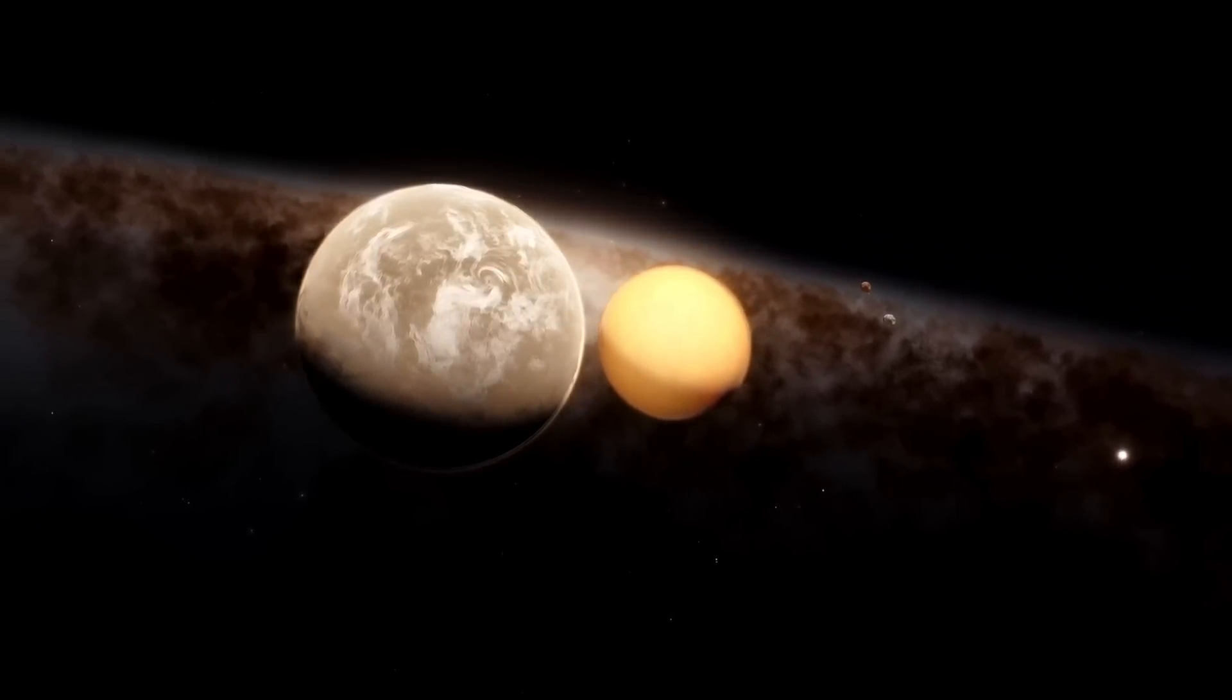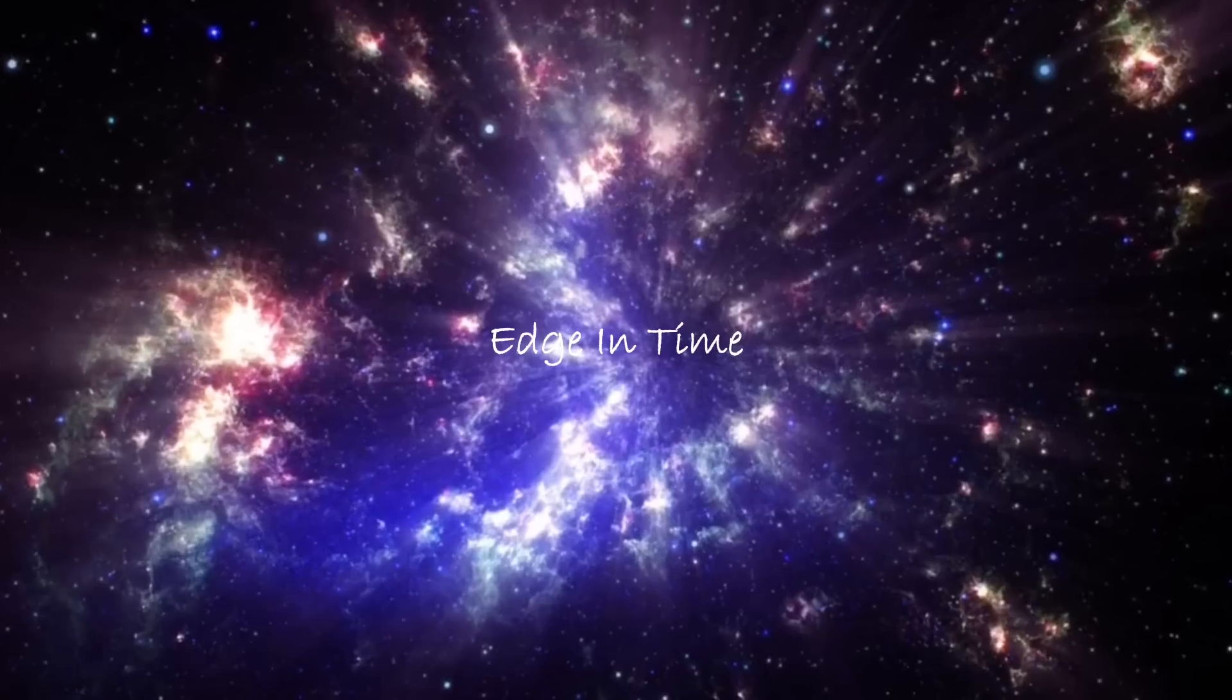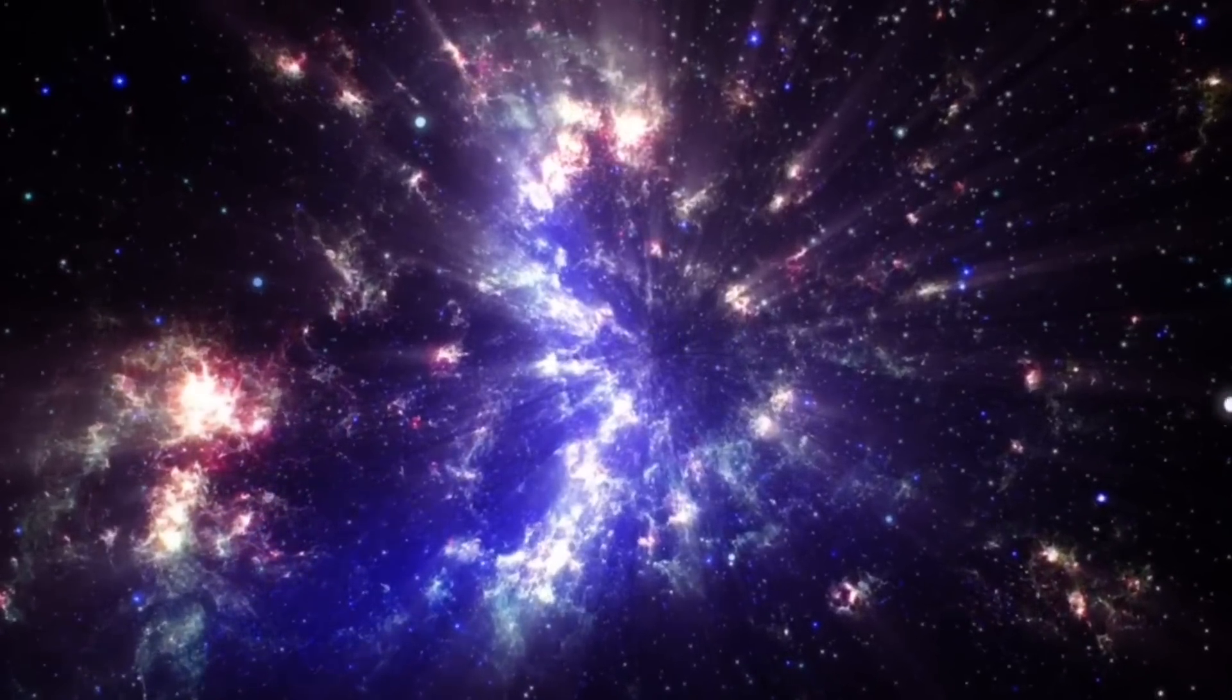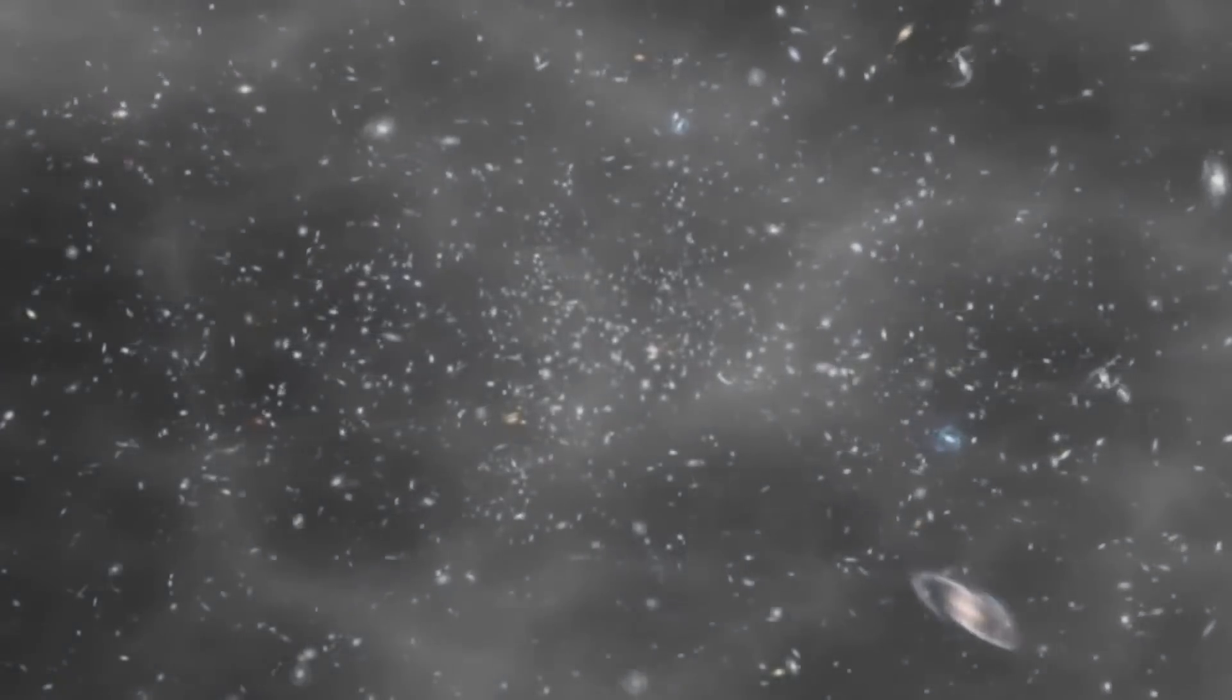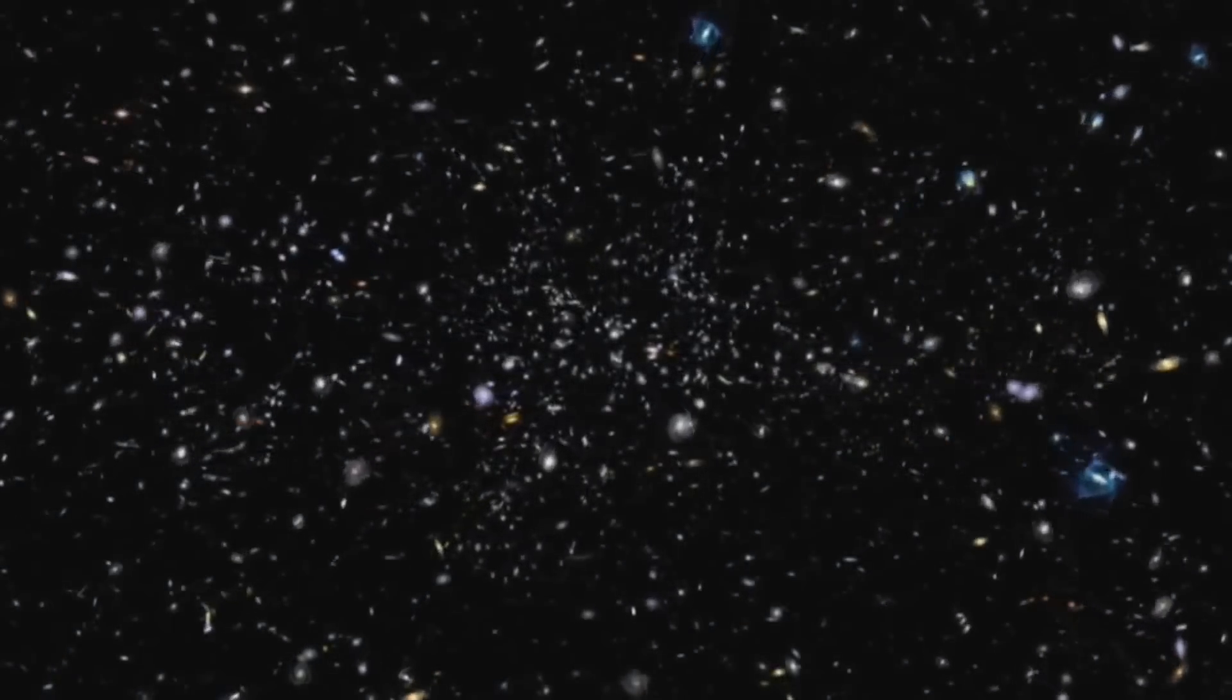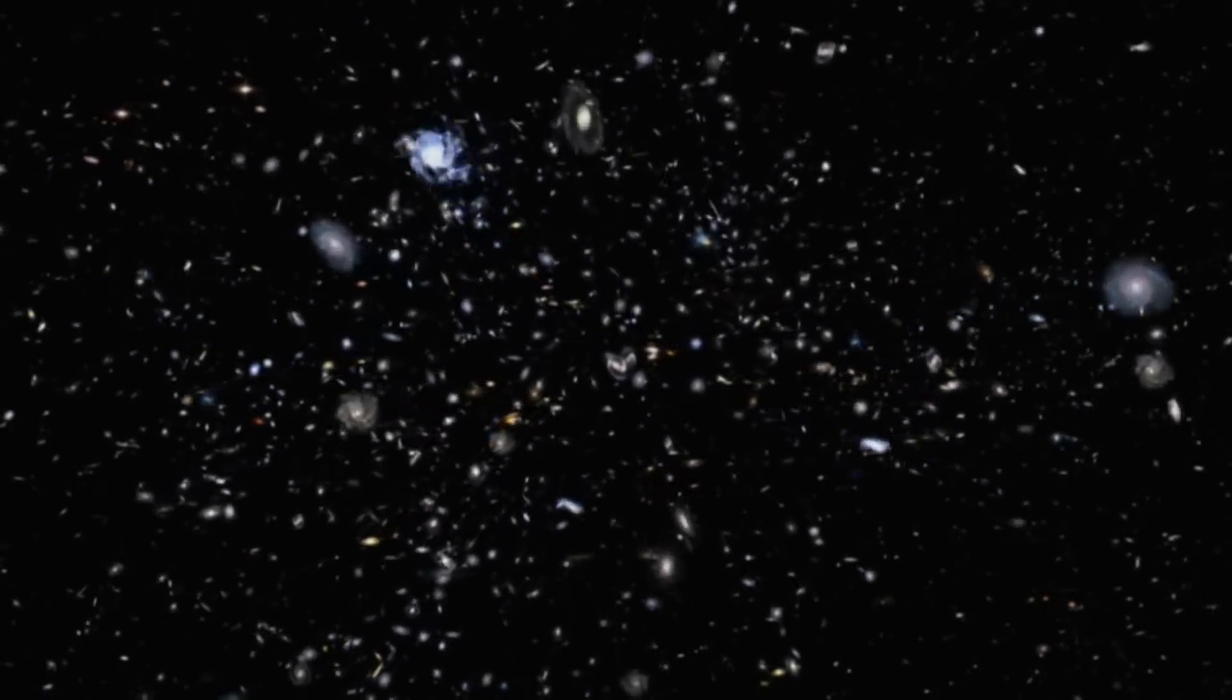Despite our lack of knowledge about the physical extent of the universe, we can be certain that it has an edge in time. The hot Big Bang, which is considered the beginning of our universe, occurred around 13.8 billion years ago. As a result, there is a fundamental limit to how far back in time we can see. Even if we travel at the speed of light, the cosmic speed limit, we can only see up to a certain point.